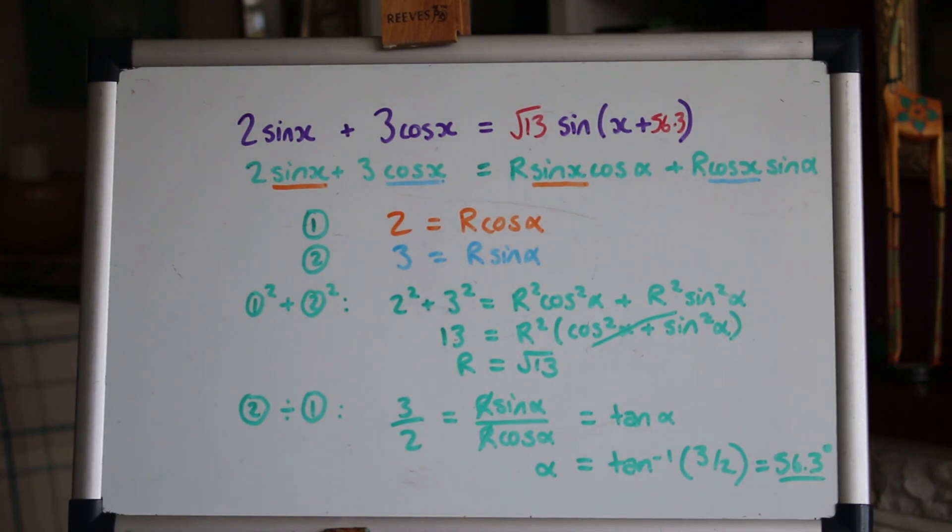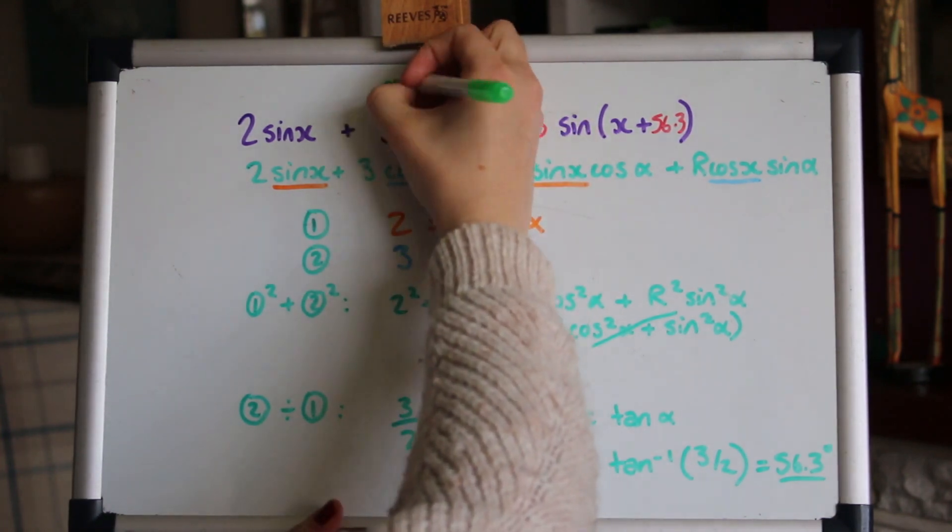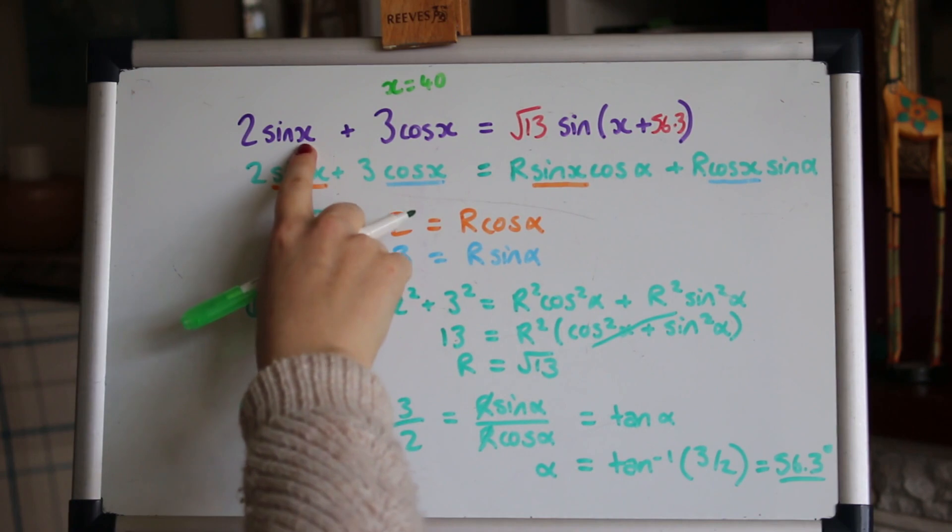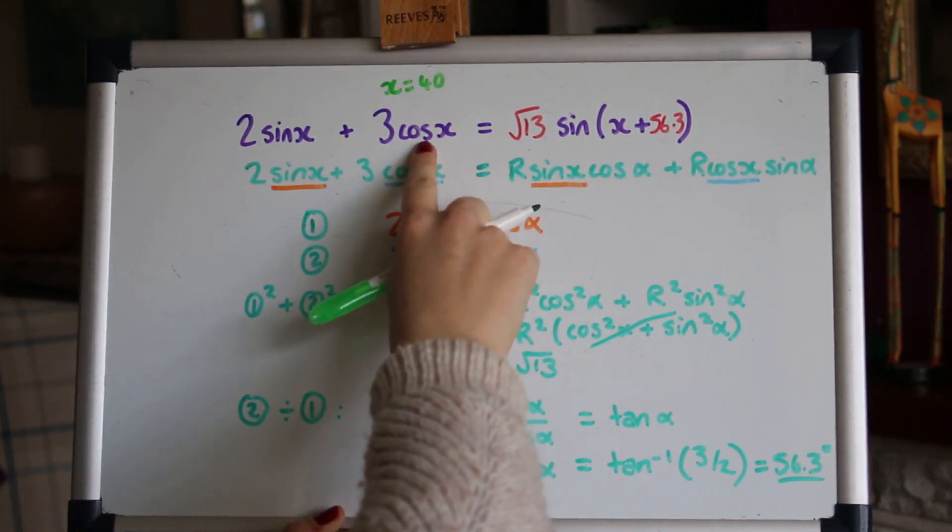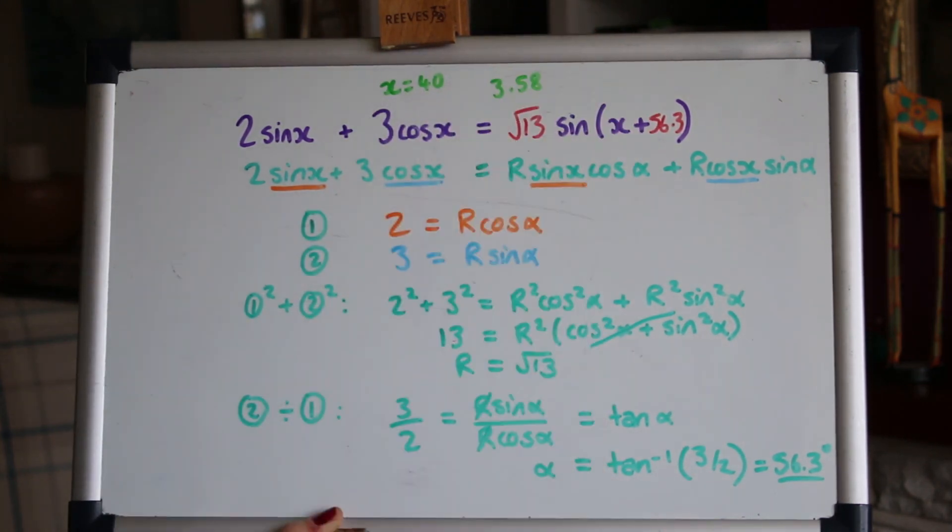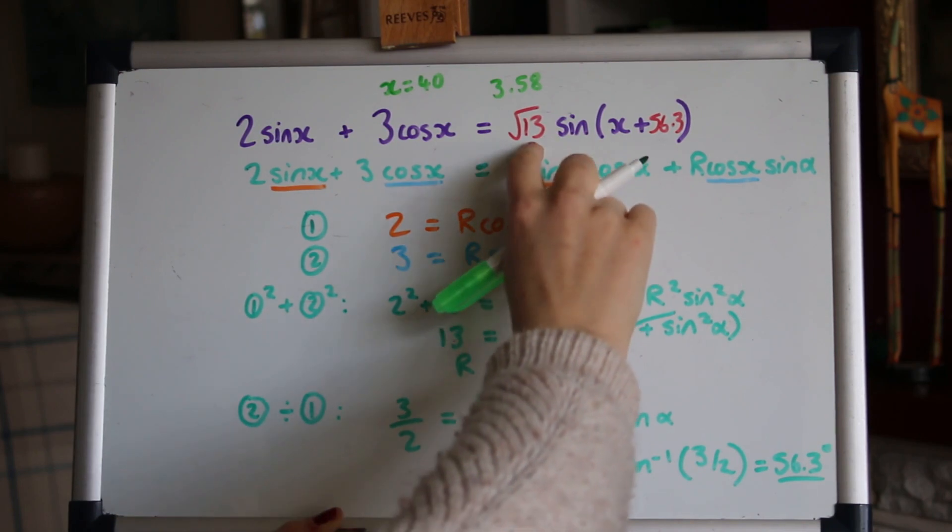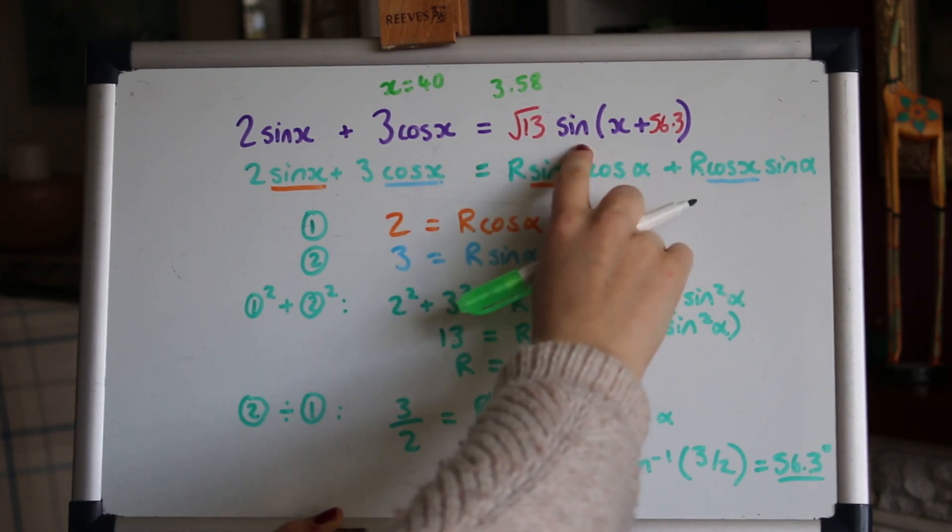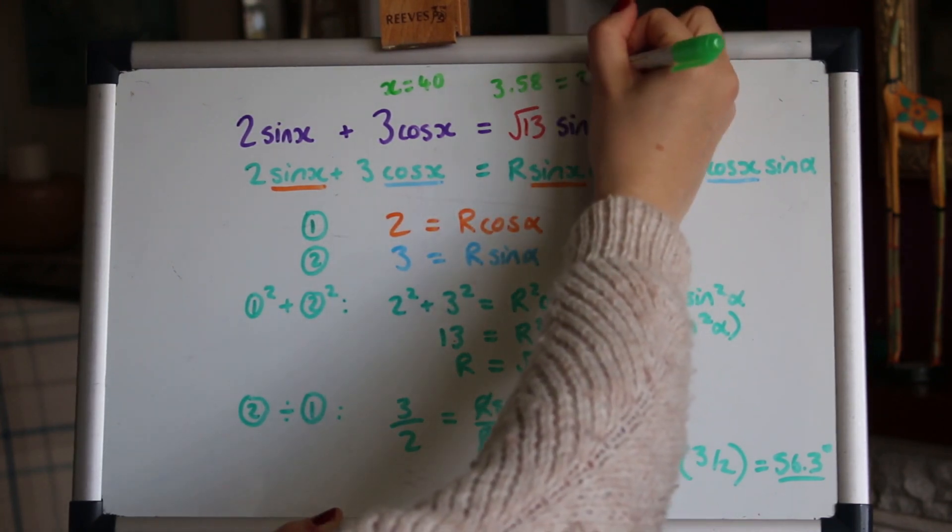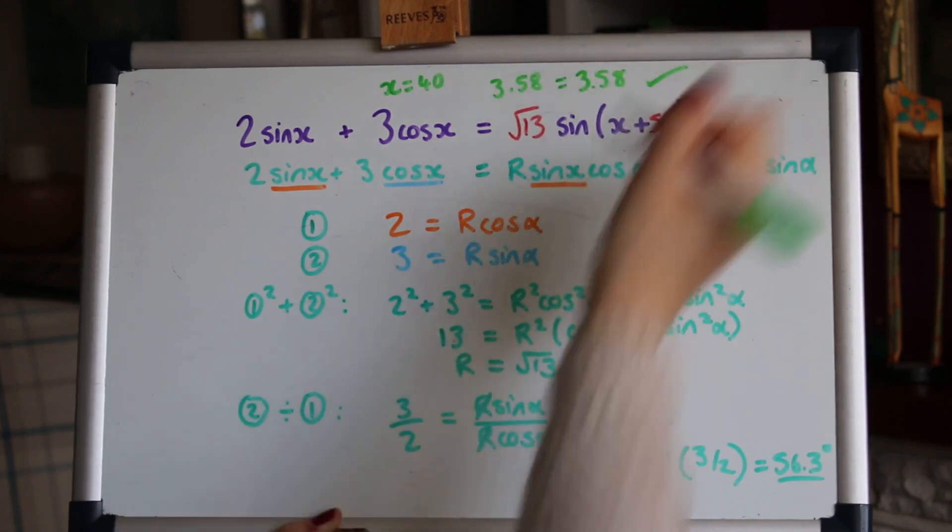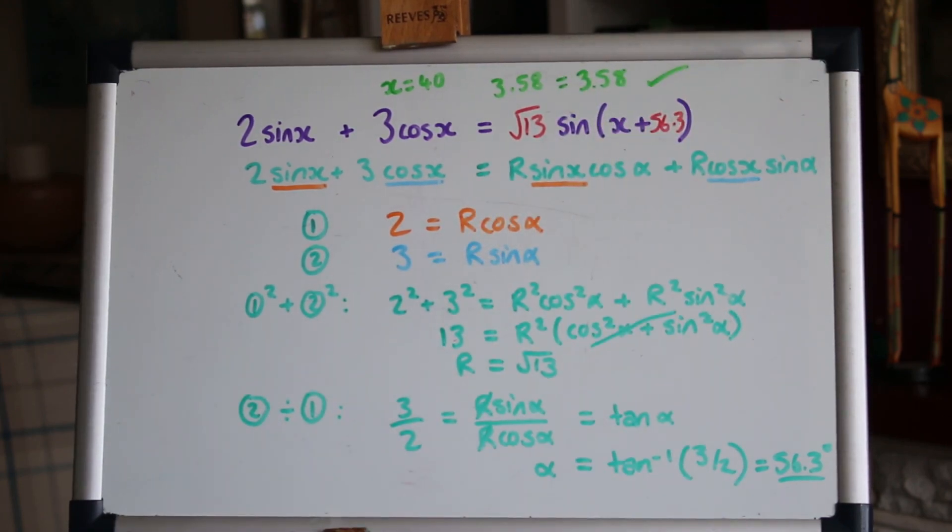It's always nice to check that your work's right and you can do a quick check on these. All you need to do is pick any odd value for x. So I might pick, for example, that x is 40 and plug that into my calculator. So do 2*sin(40) + 3*cos(40), and on my calculator I get 3.58. And on this side I can do the same thing on the calculator. √13 times sin(40 + 56.3), and again I get 3.58. And if you get the same value, then you know you've done it right. Great.